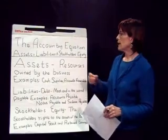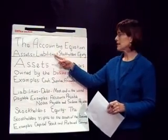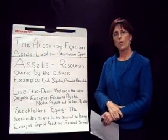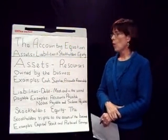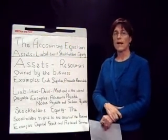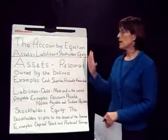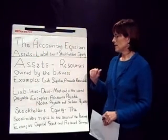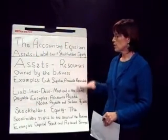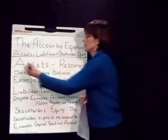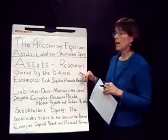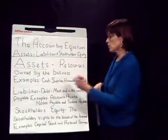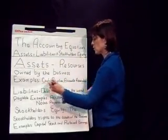If you've read your chapter, you may have read the accounting equation as assets equal liabilities plus stockholders' equity. But what is an asset? In order to understand that equation, you have to have a good understanding of what these words are. Assets are resources owned by the business. Some examples — every business should have some cash, that's a resource.